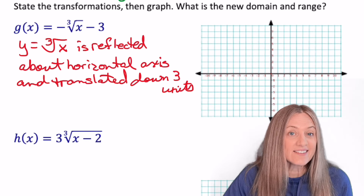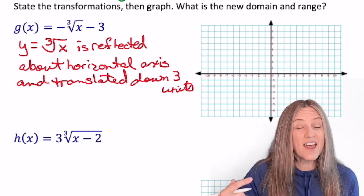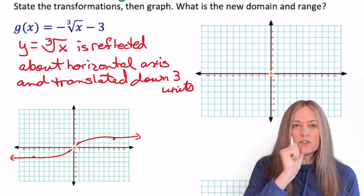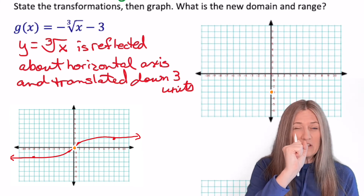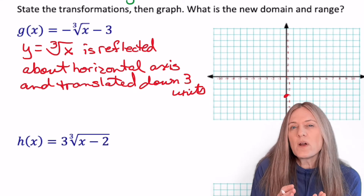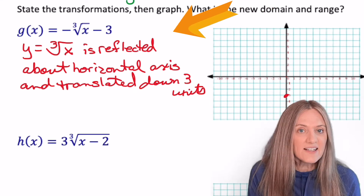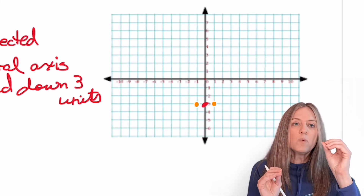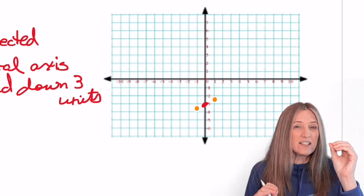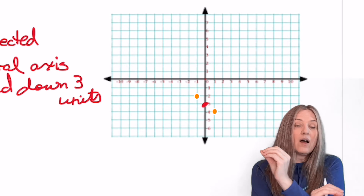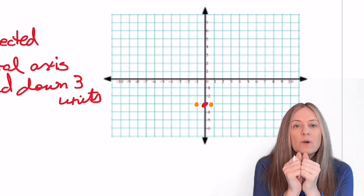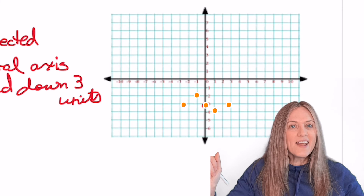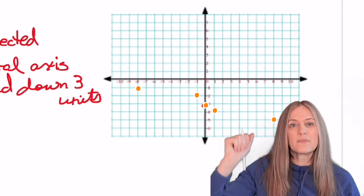y equals the cube root of x, reflected about the horizontal axis and translated down 3 units. Starting in the middle, pull the center point down 3 to 0, negative 3. For pattern points, the reflection reverses the vertical direction: from the middle, over 1, right goes down and left goes up. Over 8, right goes down and left goes up. Plot and sketch the reflected, downward-shifted curve.